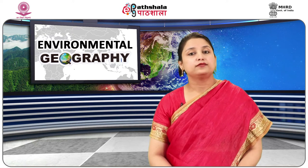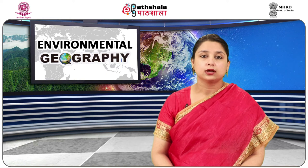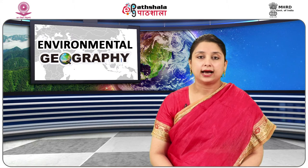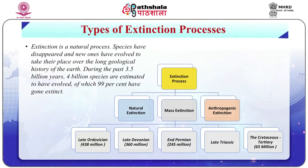If the upper estimate is true — that there are 100 million different species coexisting with us — then between 10,000 and 100,000 species are becoming extinct each year, as given by World Wildlife Fund in 2017. Extinction is a natural process; species have disappeared and new ones have evolved over the long geological history of the earth. During the past 3.5 billion years, 4 billion species are estimated to have evolved, of which 99 percent have gone extinct.